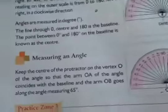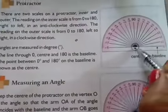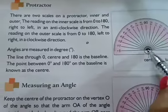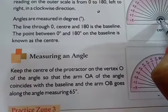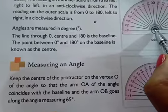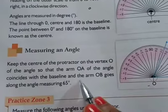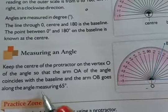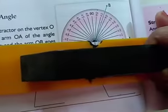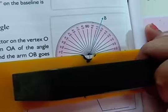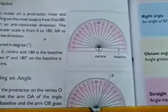Measuring angles. Keep the center of the protractor on the vertex. This center of the protractor will be kept on the vertex O of the angle, so that arm OA of the angle coincides with the base line. And the arm OB goes along the angle measuring 65 degrees. With the help of the protractor, you will measure the angle.